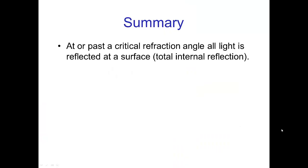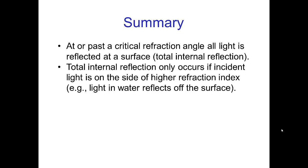In summary, at or past a critical refraction angle, all light is reflected at a surface. This is called total internal reflection. Total internal reflection only occurs if the incident light is on the side of higher index of refraction. For example, light in water when it reflects off the surface.